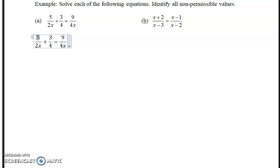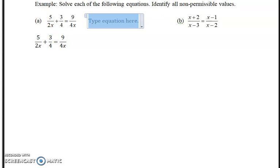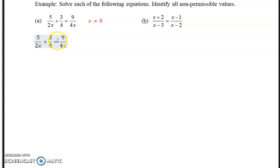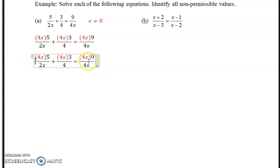I've recopied the original equation. First step, factor each denominator - all the denominators are factored already. Identify the non-permissible values: x can't equal 0. Then we multiply the equation by the least common denominator 4x.